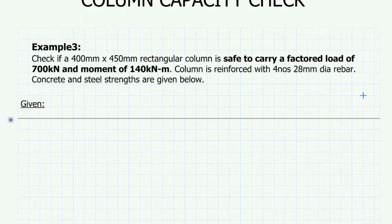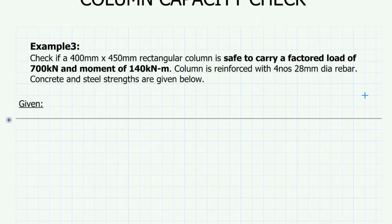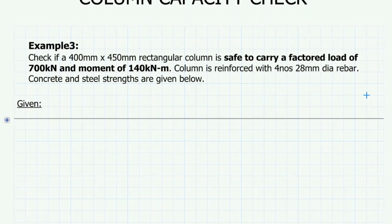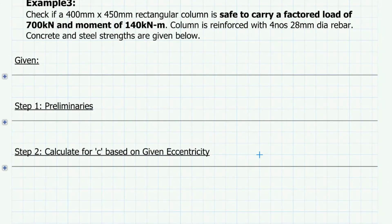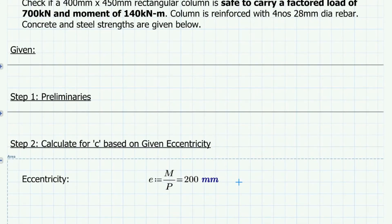Let's look at another example. This time we need to check if the column is safe to carry a factored load and a factored bending moment. We need to check if the column is safe to carry a factored load of 700 kN and a bending moment of 140 kN-m. The eccentricity can be calculated as the factored moment divided by the factored load, which gives an eccentricity value of 200 mm.